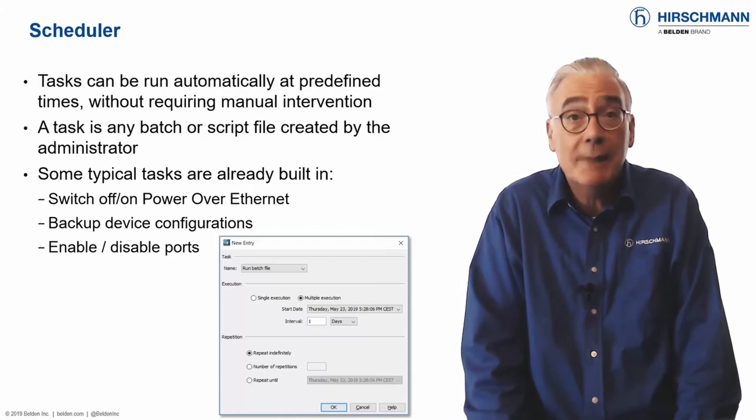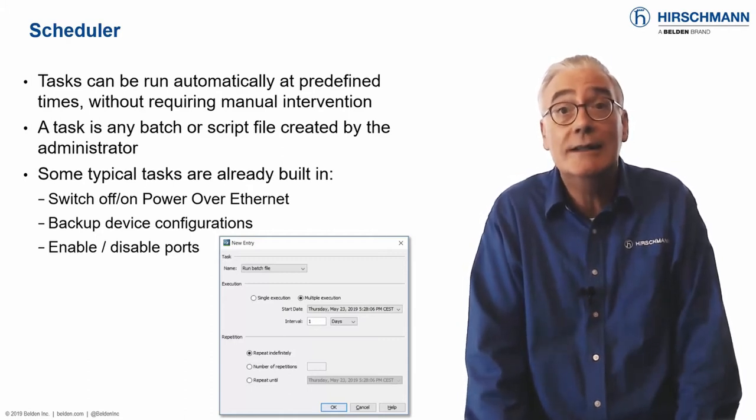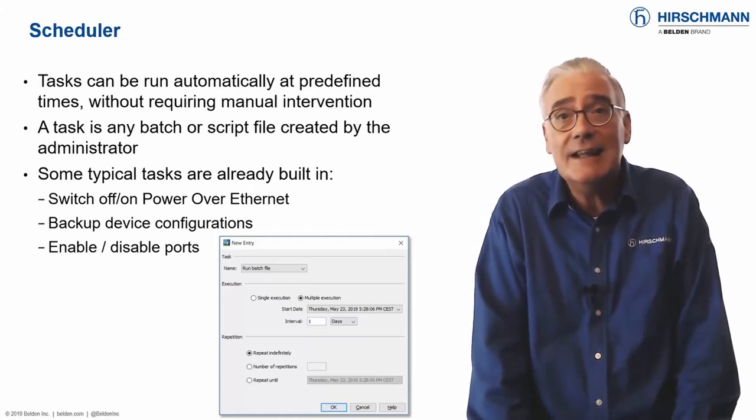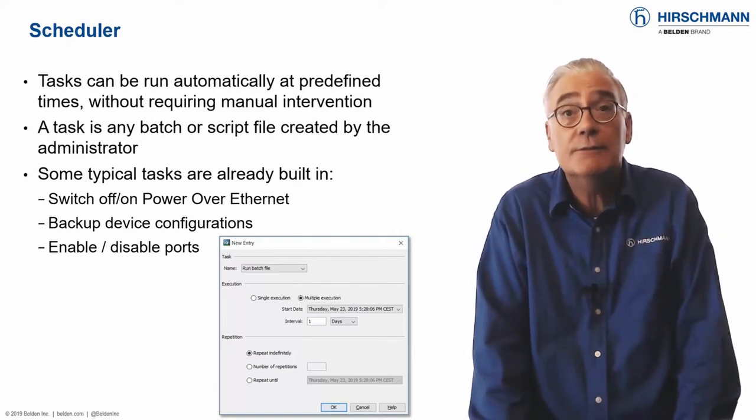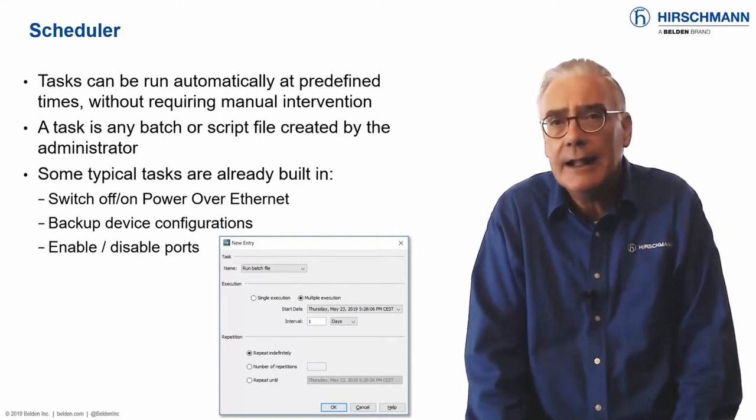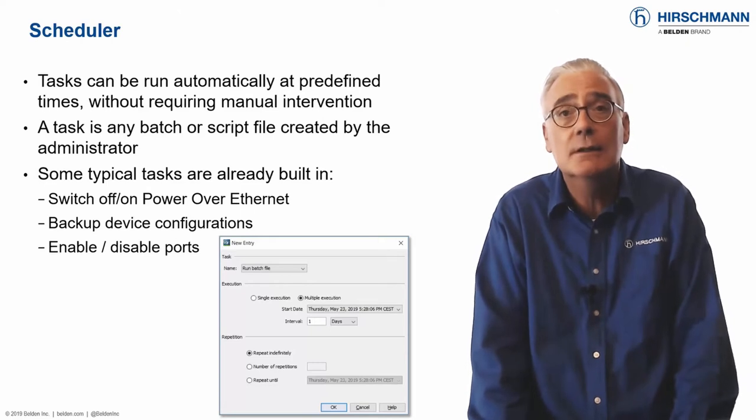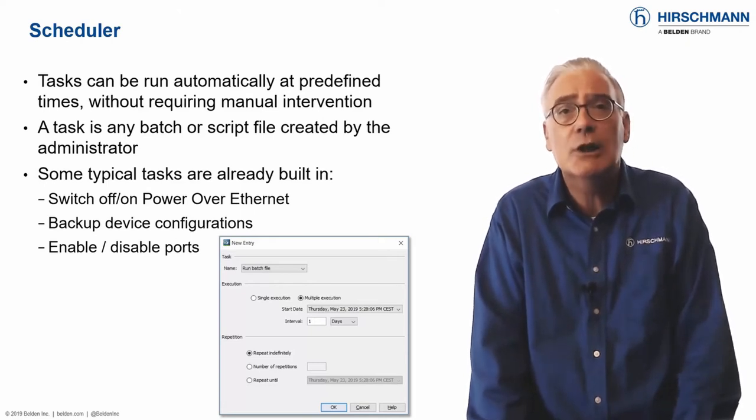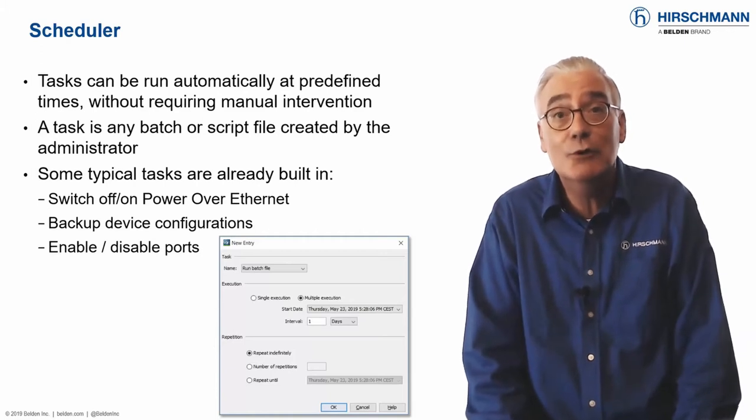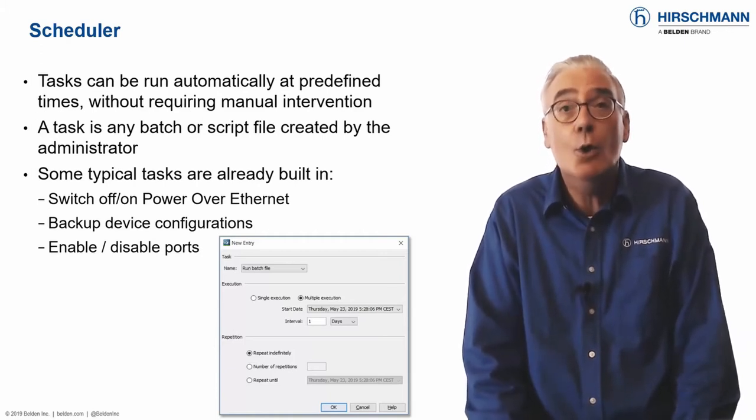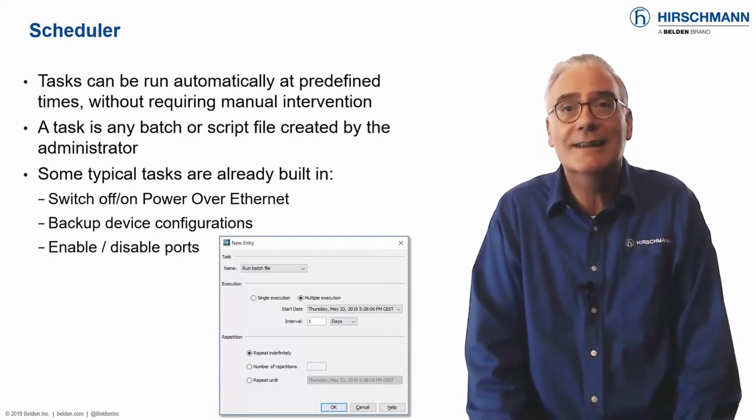For other tasks which may be specific to industrial networks, the scheduler can run batch or script files created by the network administrator. Wildcards are supported for elements like file names or IP addresses. By using the scheduler, you can rest assured that tasks are running smoothly in the background without your personal intervention.